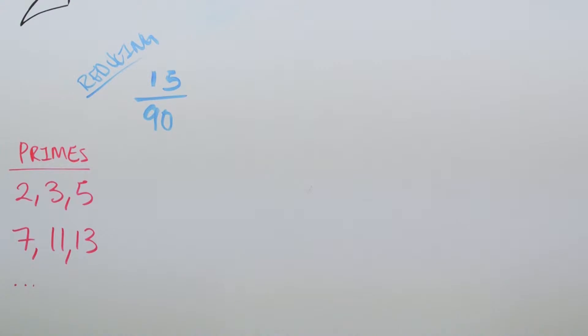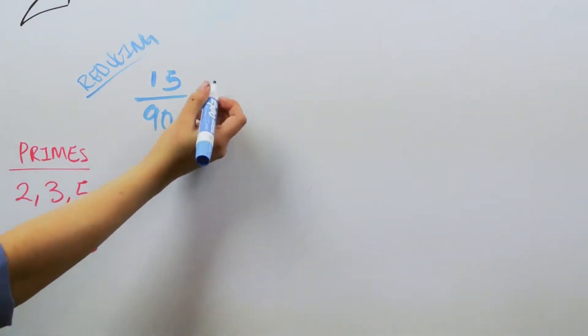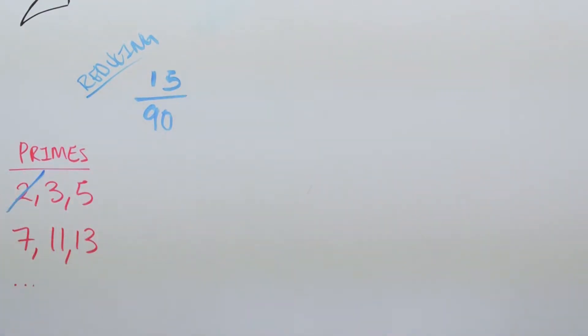Now, this may sound a bit confusing, so let's try this method with a fraction 15/90. First, let's go to the prime numbers and see if either 15 or 90 is divisible by them. We start off with 2, which we realize can go into the 90, but not the 15. So we move on to the next prime number, which is 3.